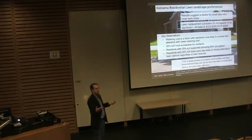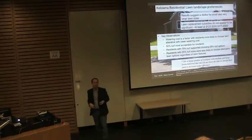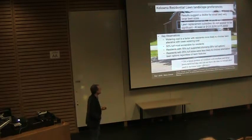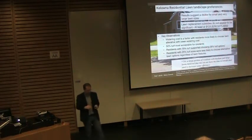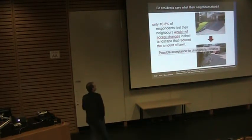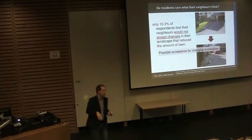Watering cost was important — the greater the cost, the less likely residents would choose that lawn. A 50% turf coverage was acceptable for most residents. Residents who currently had 75% turf were more willing to switch to smaller turfs, whereas those who already had small lawns didn't want to switch — they already had their ideal lawn. Going into the study, many assumed nobody wanted lawn changes, but we found that only about 10% of the population felt their neighbors would find changes disturbing.